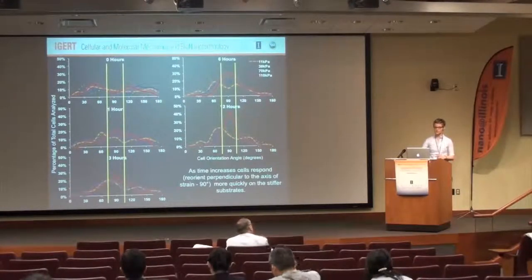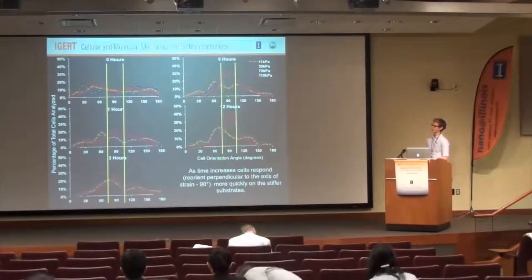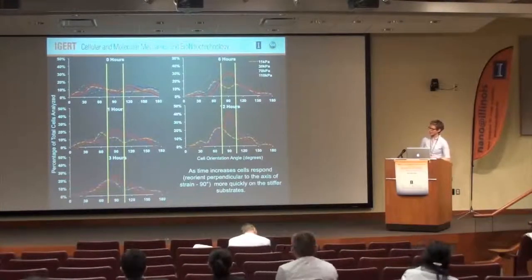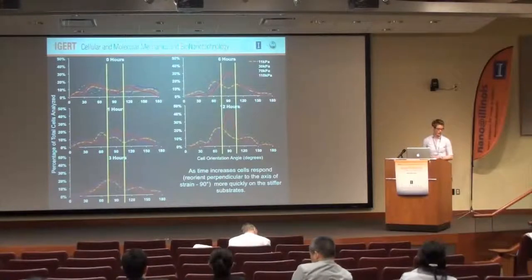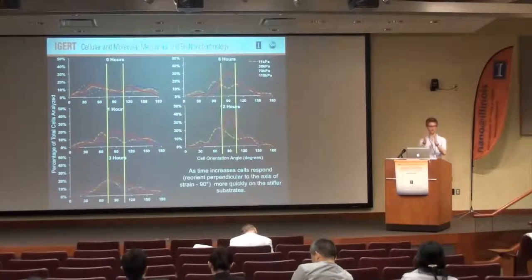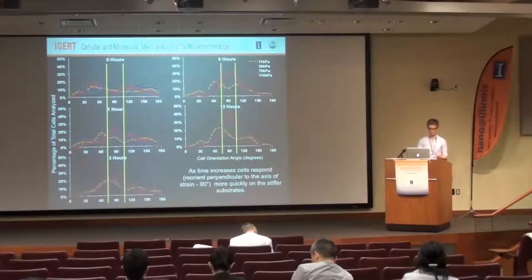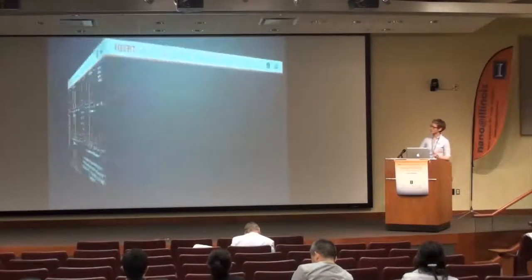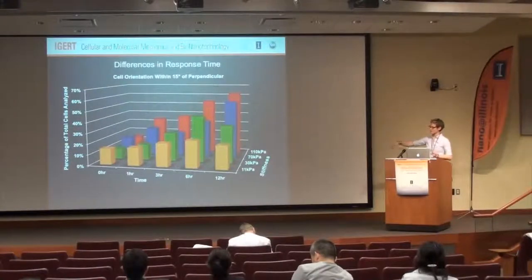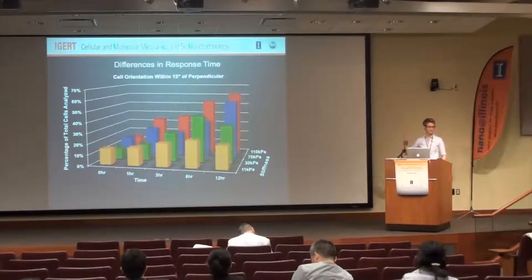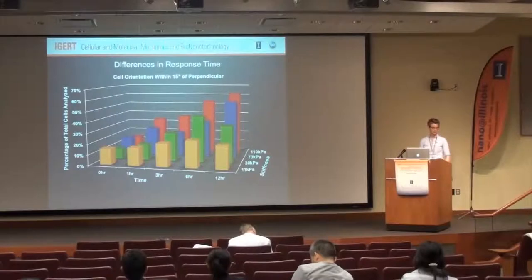These are all fibroblasts. Looking at five graphs at once can be overwhelming, so I extracted the response region of interest — 15 degrees within the reorientation window. This shows it more clearly: by stiffness, you can see there's a quicker response on the stiffer substrate (red) compared to the orange or any of the other stiffnesses.